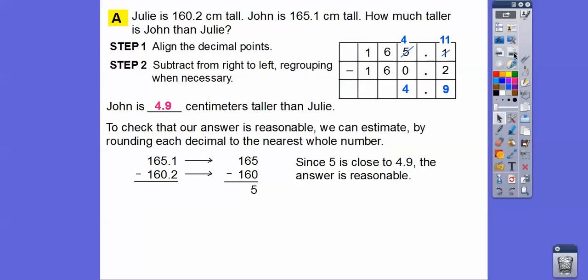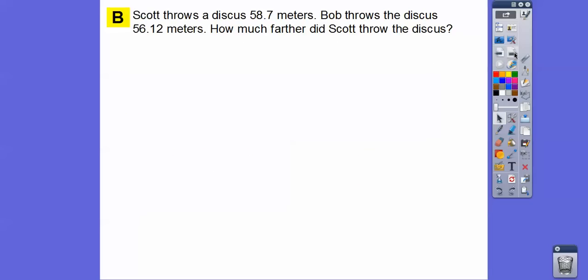We can check our answer to make sure it's reasonable by rounding to the nearest whole number. 165.1 rounds to 165, and 160.2 rounds to 160. When we subtract those, that gives us 5. Since 5 is close to 4.9, then 4.9 centimeters is a reasonable answer.